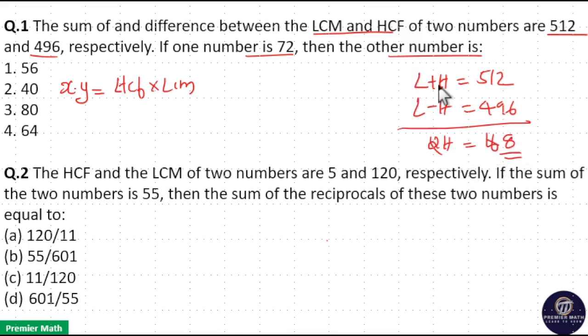So HCF is 8, which means LCM equals 512 minus 8, which is 504. Now the product of this is equal to the product of these two numbers.